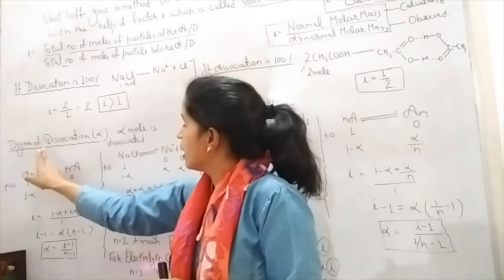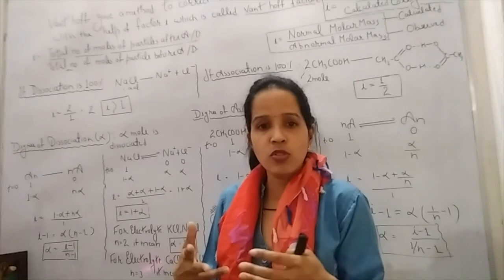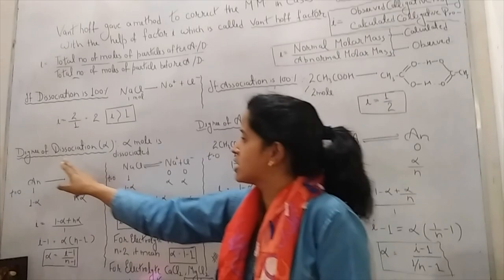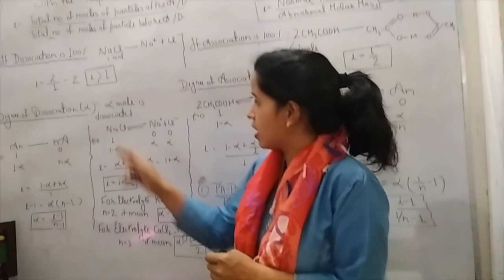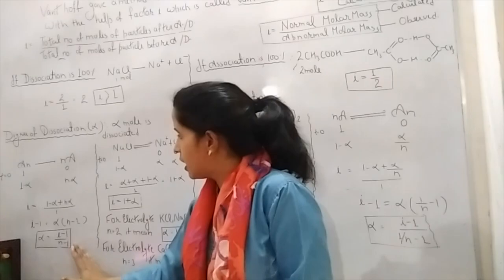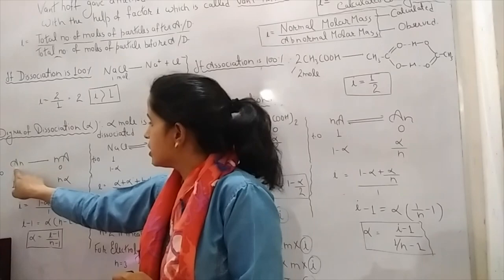Now if the electrolyte is not completely dissociated, then we study the degree of dissociation, alpha. We studied alpha in 11th standard as well. Alpha means alpha moles are being dissociated. So we will discuss the relationship between alpha and 'i'.